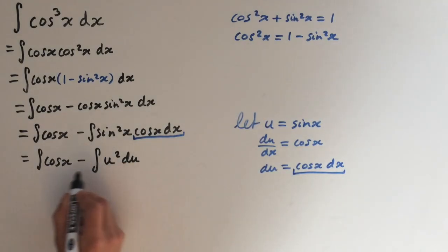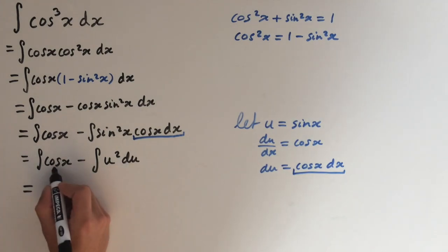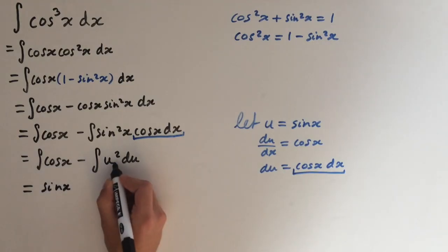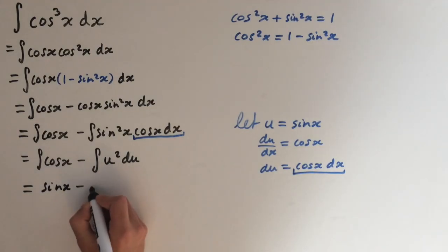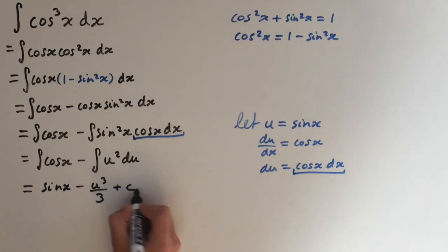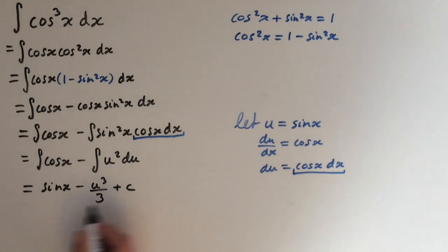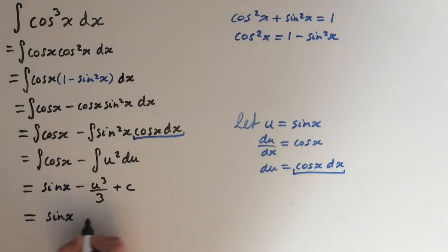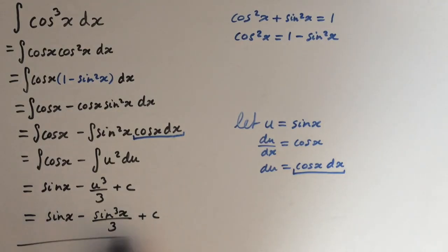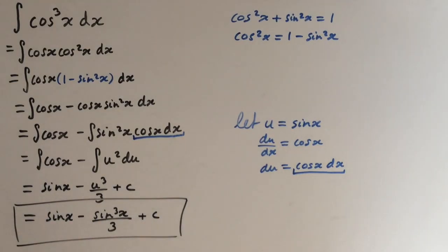Now we've got two integrals we can integrate. The integral of cos of x is just sin of x. The integral of u squared du is u cubed over 3, so we get minus u cubed over 3 plus c. Substituting u back in gives us sin of x minus sin cubed of x over 3 plus c. So there you go — the integral of cos cubed of x.